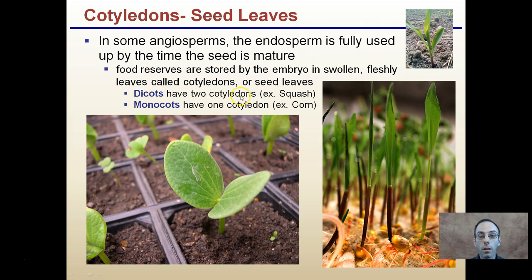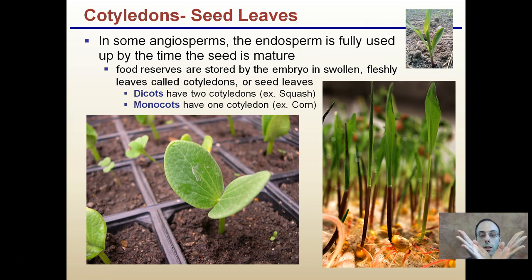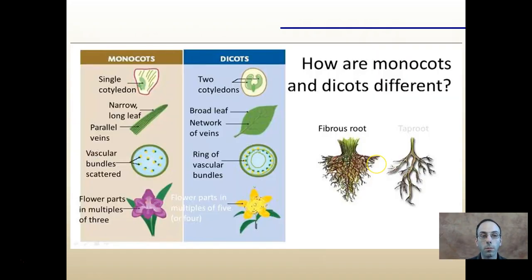Dicots have two cotyledons. An example of this would be squash — that's the seedling represented here. Over here I have monocots, and these have one cotyledon. These are corn plants. They look like grasses; they come up with that one single blade, where dicots have basically two seed leaves when they emerge.